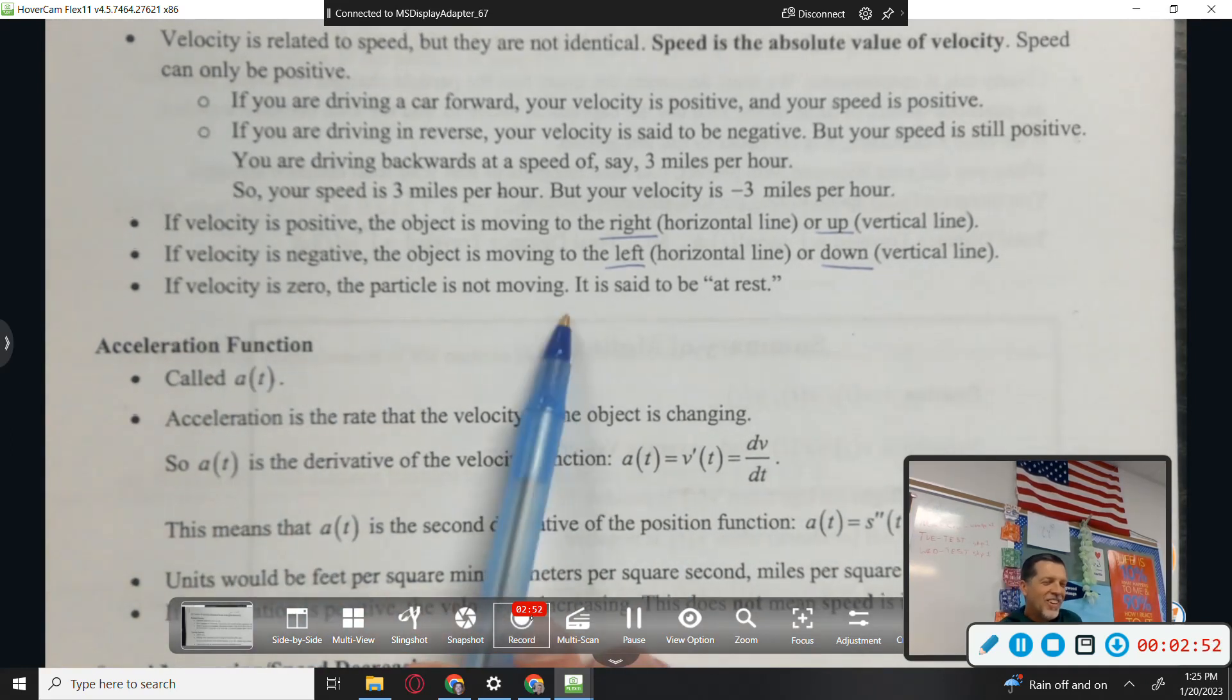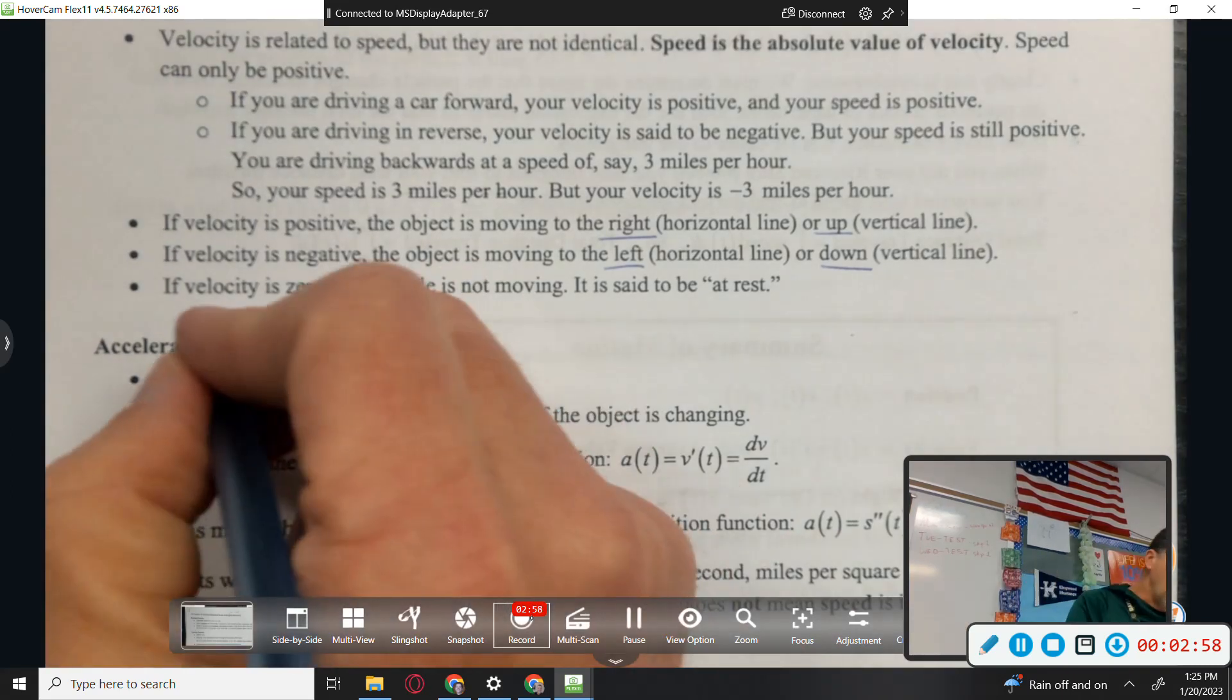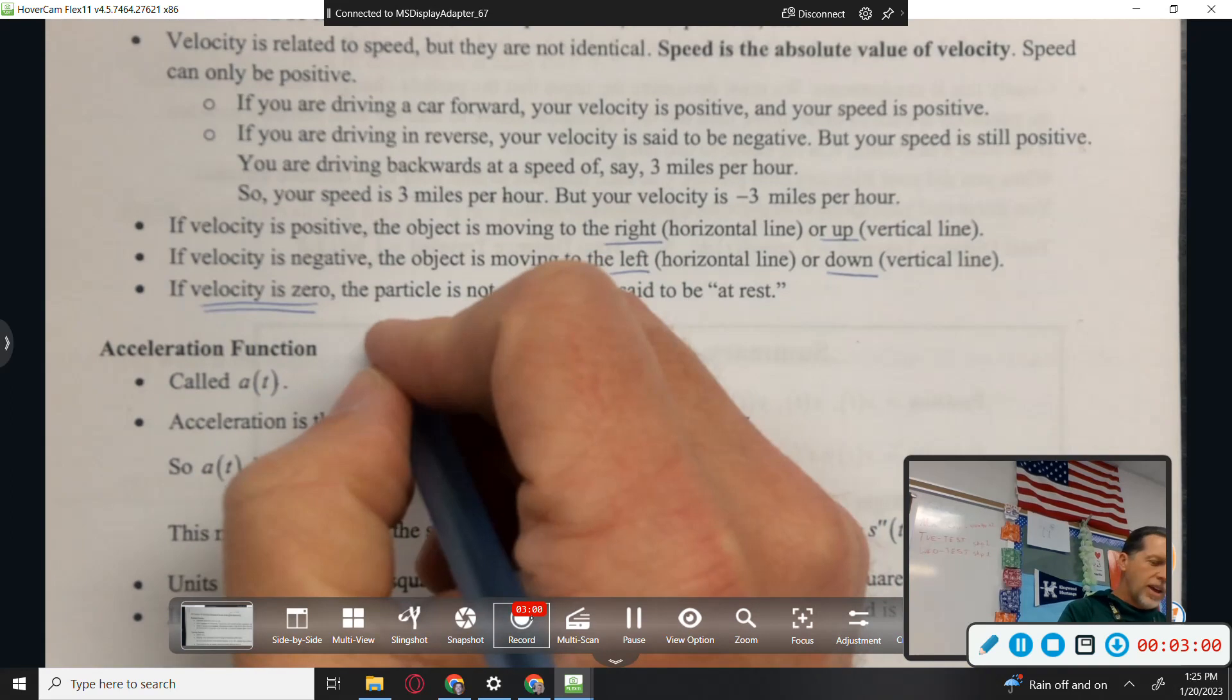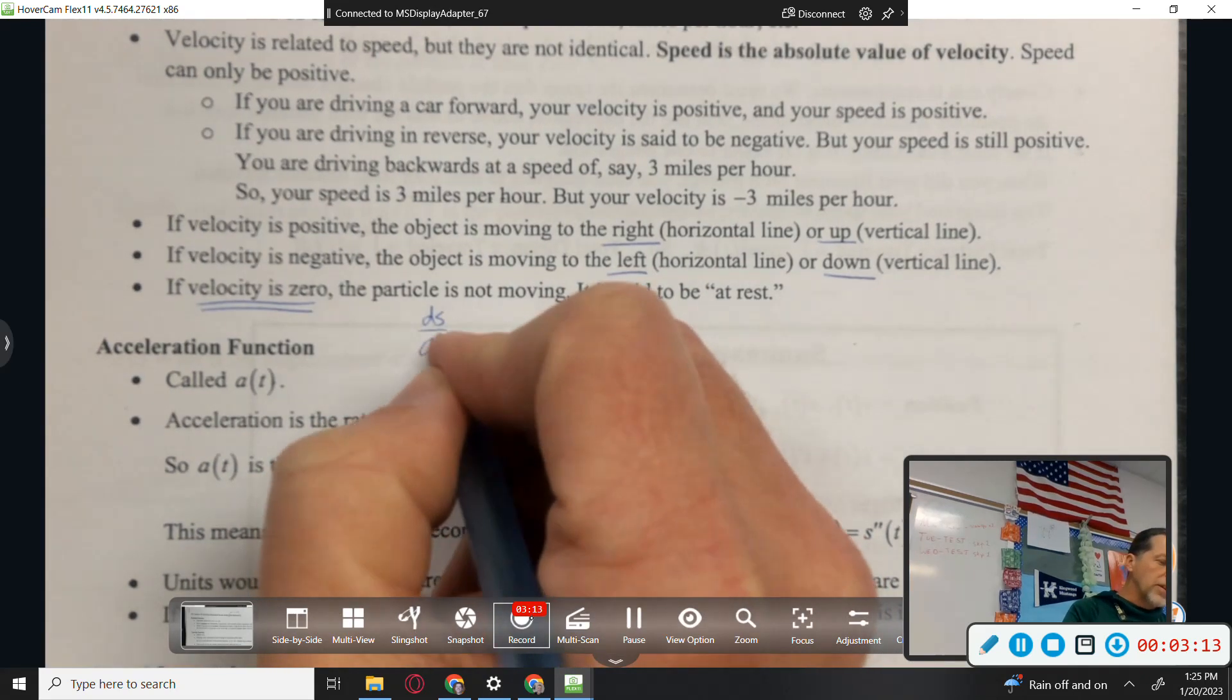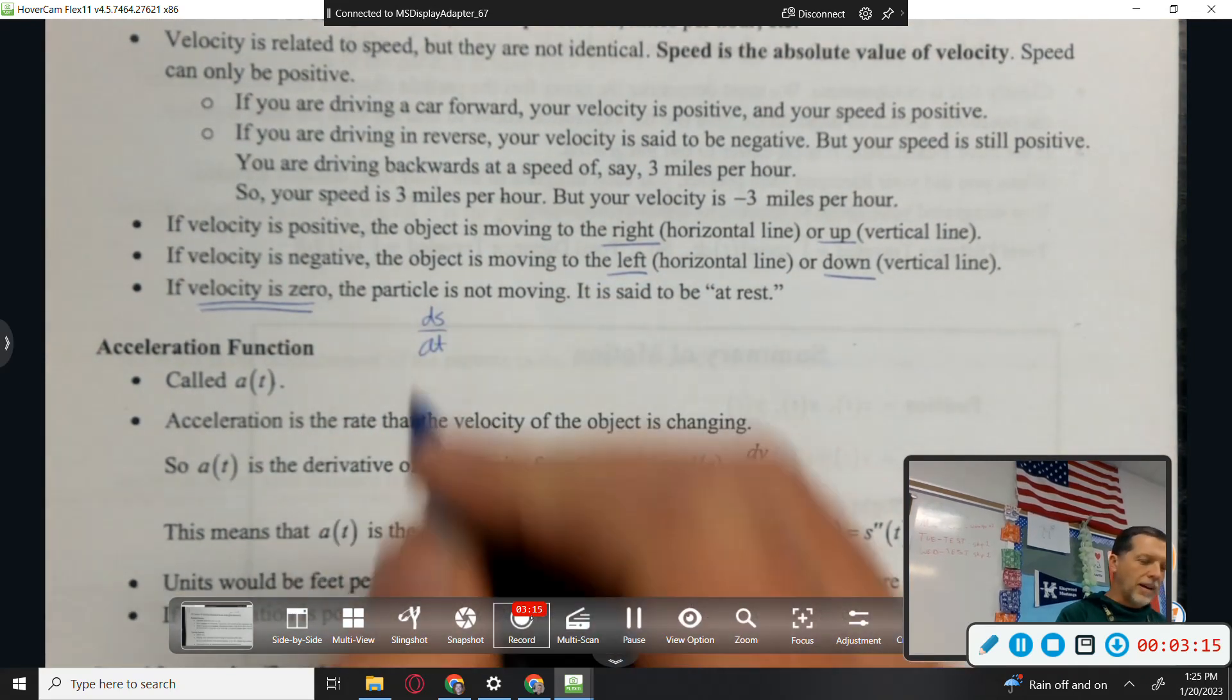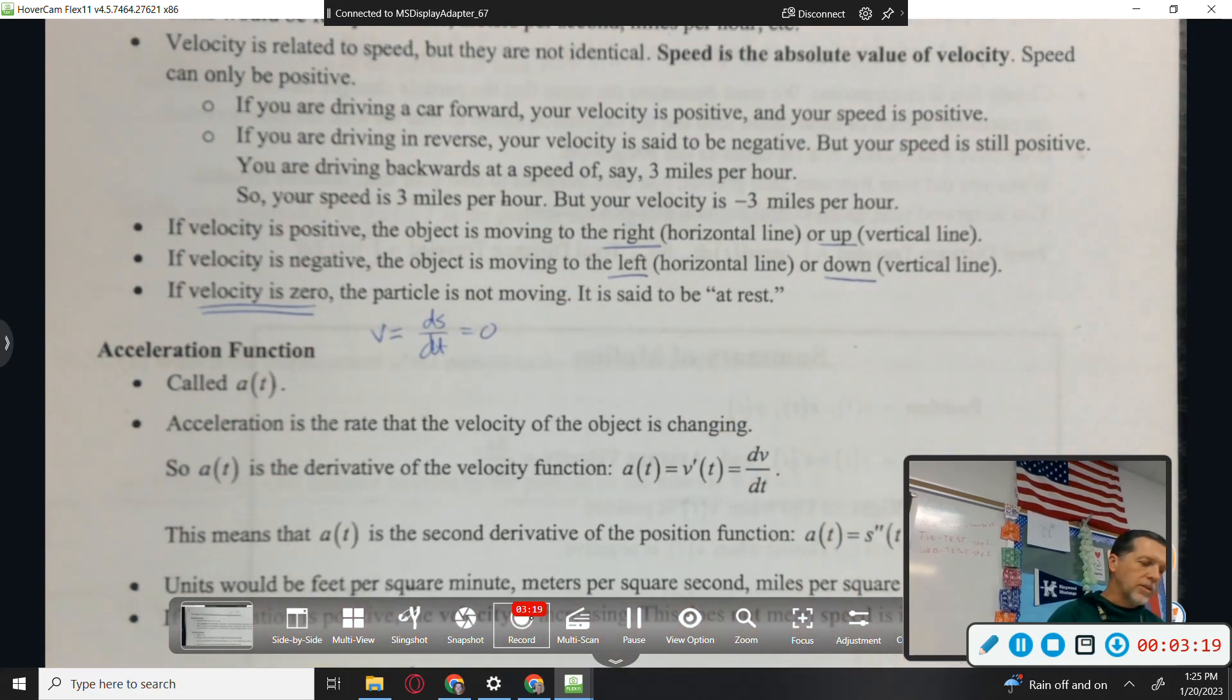If velocity is zero, then you're not moving. Was that on the last test? Is that the question you were asking on the test you just took? There was a question about velocity being zero, and I think it gave you the position. And so you should just take the derivative and set it equal to zero. You can do that. If you plug in all the answer choices, that's fine, but you would need to plug them into the derivative. dS/dt equals zero, or v equals zero.